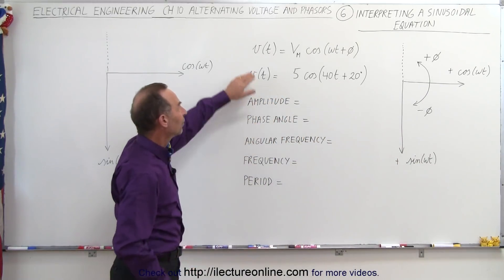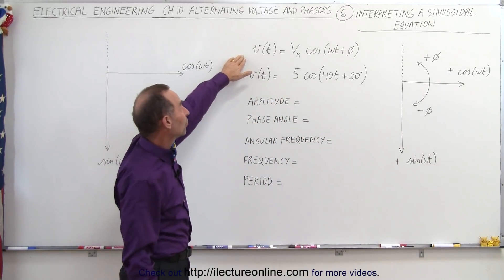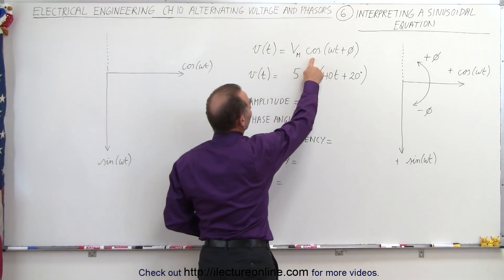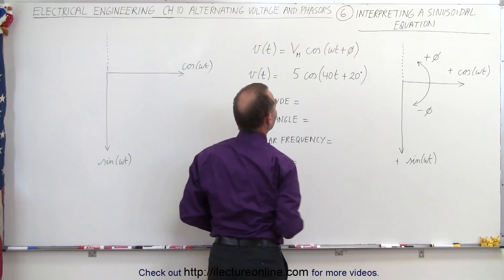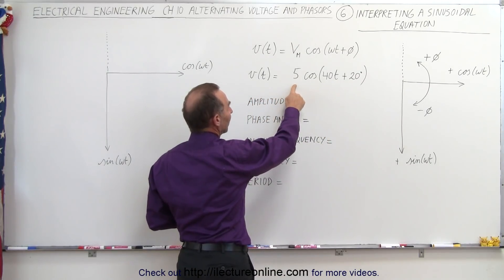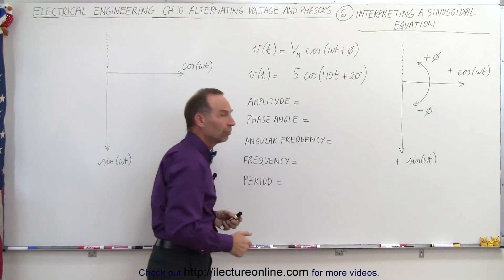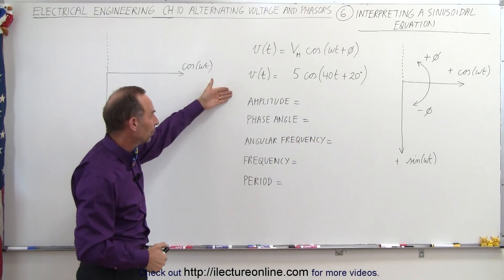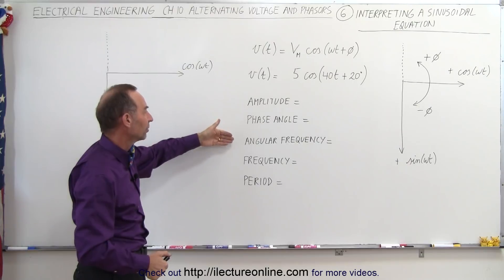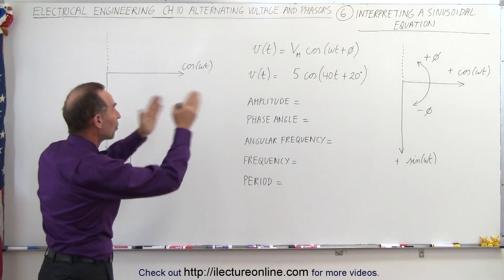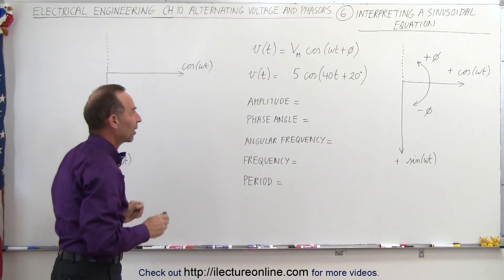So here we have a general format of the equation where the voltage as a function of time is equal to the maximum voltage times the cosine of omega t plus the phase angle. And as an example, we're going to let it equal 5 times the cosine of 40t plus 20 degrees. So from this, we should be able to interpret the amplitude, the phase angle, the angular frequency, the frequency and the period, and we should be able to draw that function on our graph.